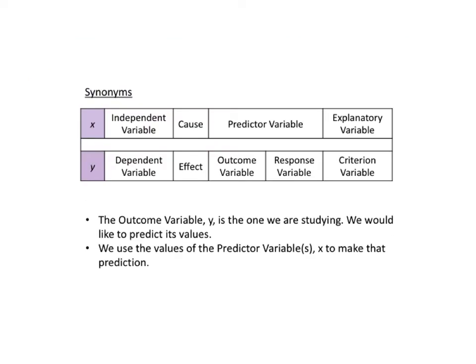This being statistics, it would not be confusing enough to just have one consistent pair of terms for the x and y variables. So different experts and authors use different terms for the same thing. This table attempts to show associated pairs of terms for x and y. Independent and dependent obviously go together as do cause and effect. Some authors use outcome variable with predictor variables, others use response variable, and some use explanatory variable and criterion variable.